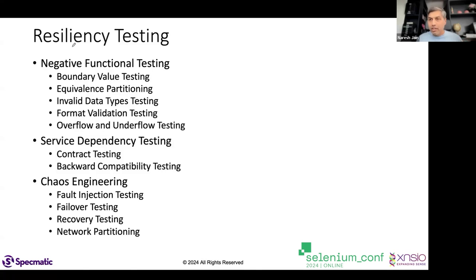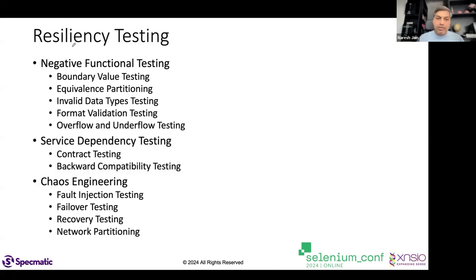Under chaos engineering there are several types of testing. Fault injection testing — bring down a service and see how resilient things are. Failover testing — bring down one pod and see if traffic fails over to another without an outage. Recovery testing — restore from database backups and verify it works. Partial network failures — check if response times still meet SLAs.